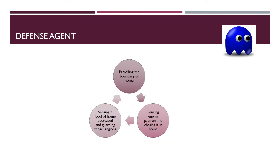Now let's look at the defense agent. The defense agent can either patrol at the boundary, sense an enemy and start to chase it, or sense which regions of our home have had food eaten and move towards those regions to protect the remaining food. The technique we use is heuristic value.